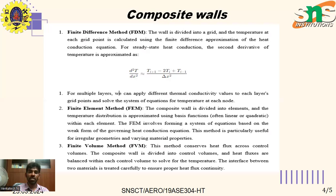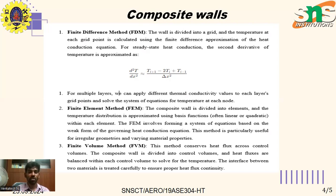In the finite difference method, the wall is divided into a grid and the temperature at each grid point is calculated using finite difference approximations of the heat conduction equation. For steady-state heat conduction, the second derivative of temperature is approximated as: d²T/dx² equals (T_{i+1} minus 2T_i plus T_{i-1}) divided by Δx². For multi-layer walls, different thermal conductivity values are applied to each layer's grid points.